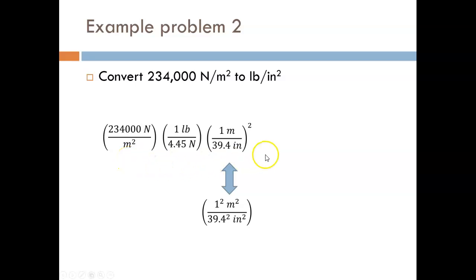We cancel out these units and are left with pounds per inches squared. Then, we use our calculator to crunch the numbers. Caution! Don't forget to square the 39.4 on this step. After calculating, we see the result of 33.9 pounds per inches squared. This example is a great illustration of why I emphasized the proper formatting for unit conversions. It made it very simple and mathematically correct to square an entire term to get the needed conversion factor.